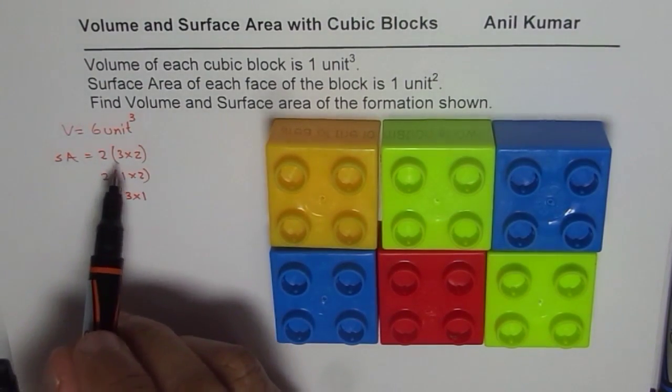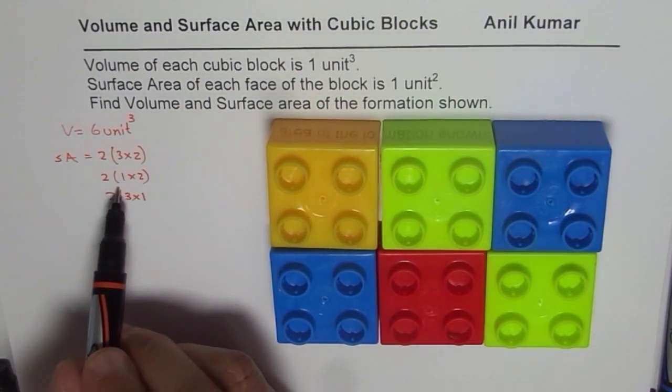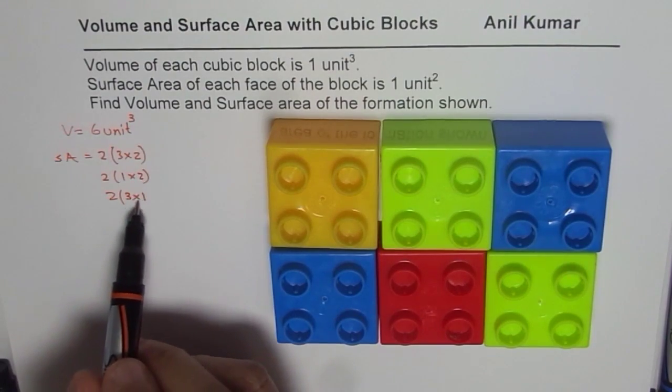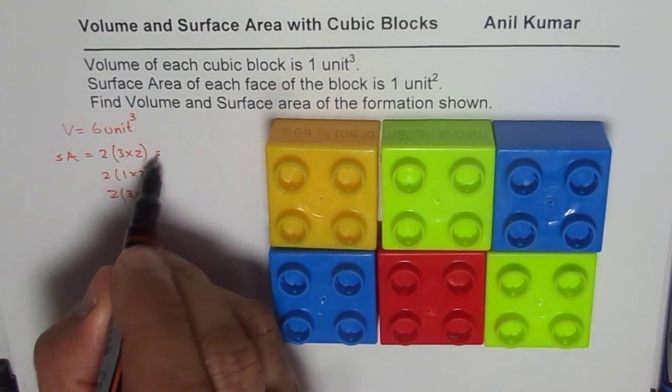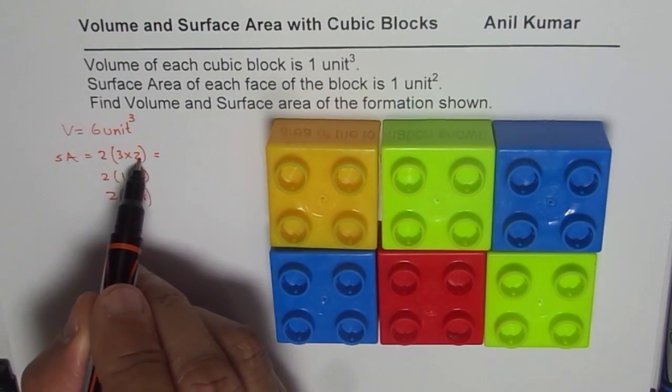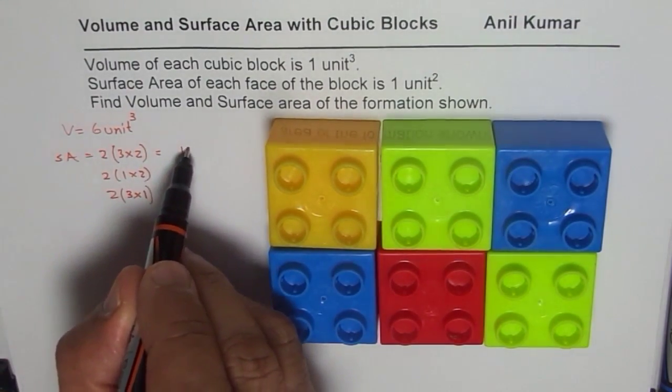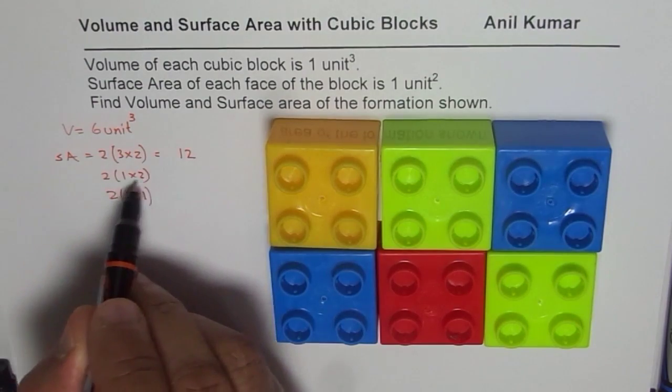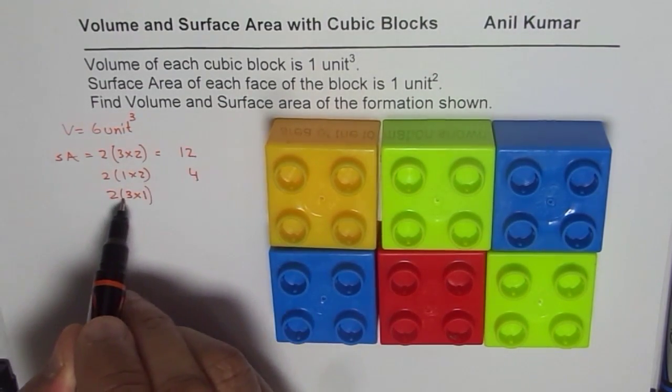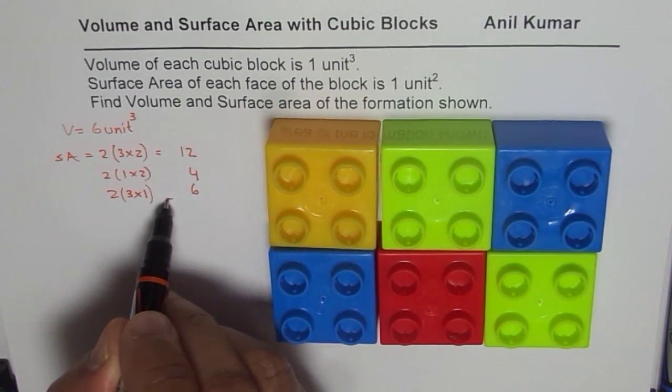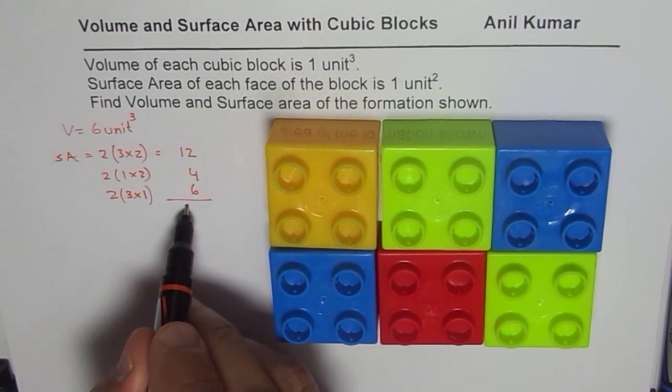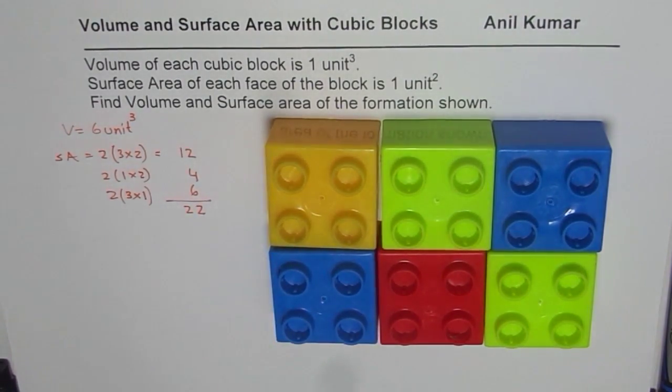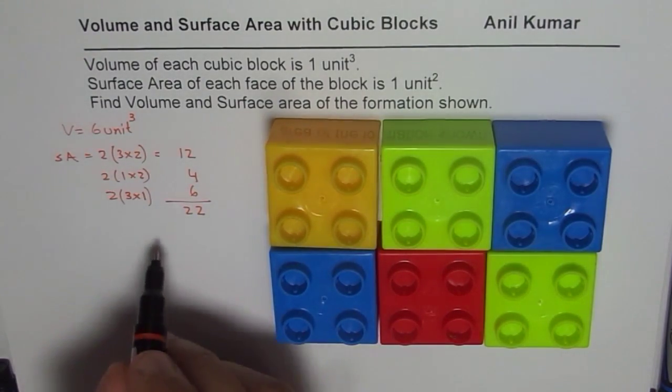So all these add up to give you surface area. If you add them up, 3×2 is 6, 1×2 is 2, 3×1 is 3, and when you multiply by 2, all this equals: 3×2 is 6, 6+2 is 12, 2×2 is 4, and 3×2 is 6. So when you add them up, what do you get? You get 10 and 22. So the surface area is 22 and the units will be unit square.